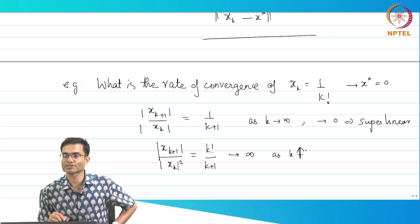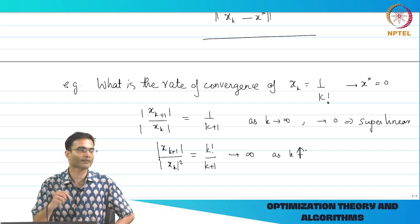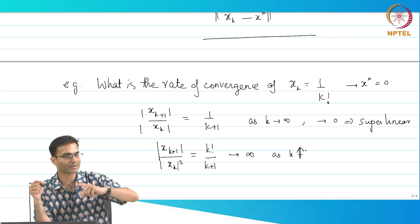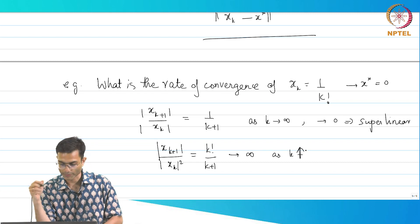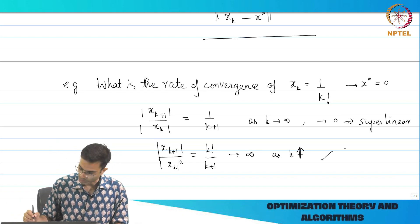It is not going to a positive number, it is not, for example, here it is not being upper bounded by some constant number, right. So this is actually infinity as k increases, right. So therefore, this sequence does not have quadratic rate of convergence, it has super linear rate of convergence. You will find always that there is going to be only one of, it is not going to be both at the same time.